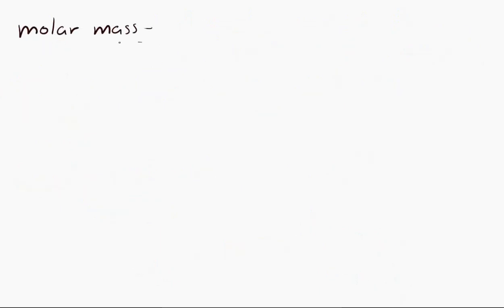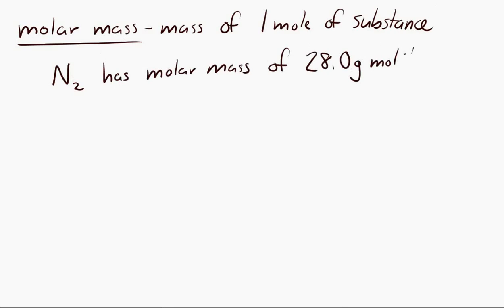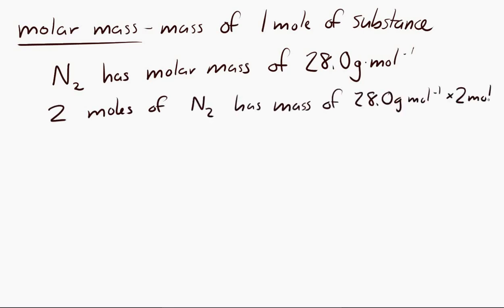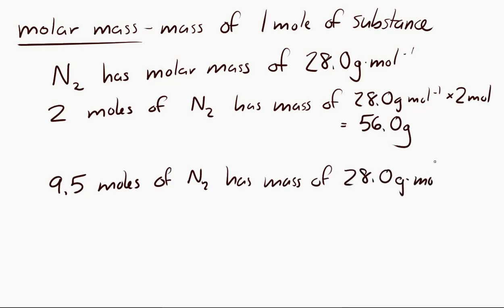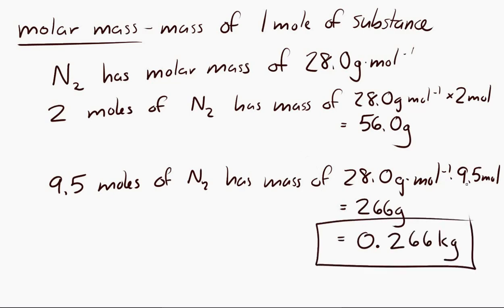Another concept is the molar mass — the mass of one mole of a substance. For instance, diatomic nitrogen, N₂, has a molar mass of 28 grams per mole. If you had two moles of N₂, you would have 56 grams. And if you had 9.5 moles of N₂, that's 28 grams per mole times 9.5 moles, giving a mass of 266 grams, or 0.266 kilograms.